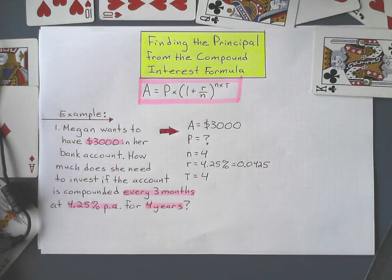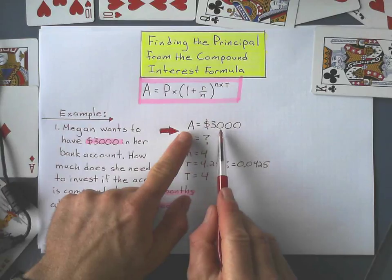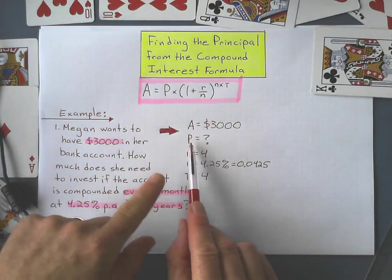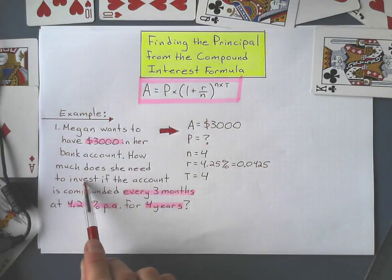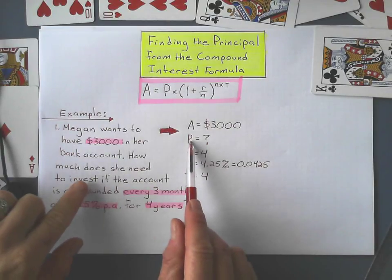Okay, so let's just recap this. $3,000 is my new amount. P is the principal. I don't know what that is yet, so that's going to remain a variable. How much does she need to invest? That means that's what we're trying to find out.